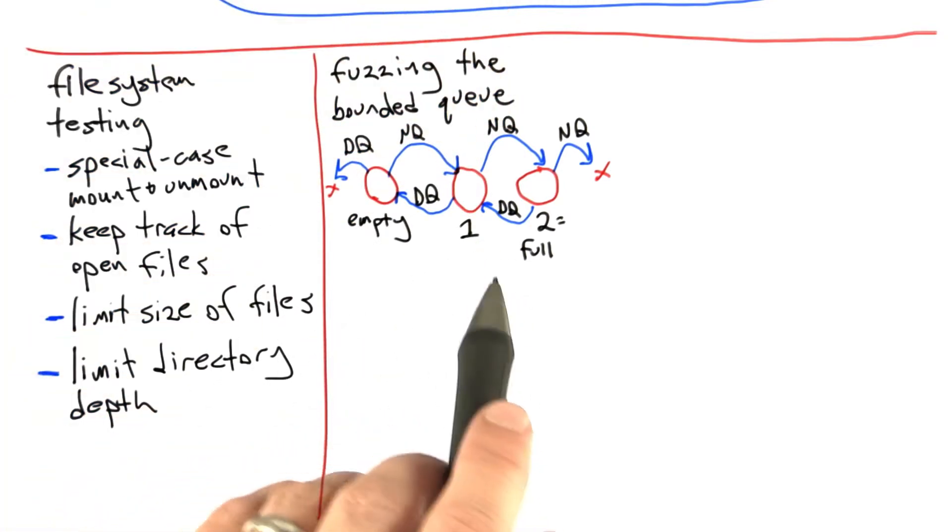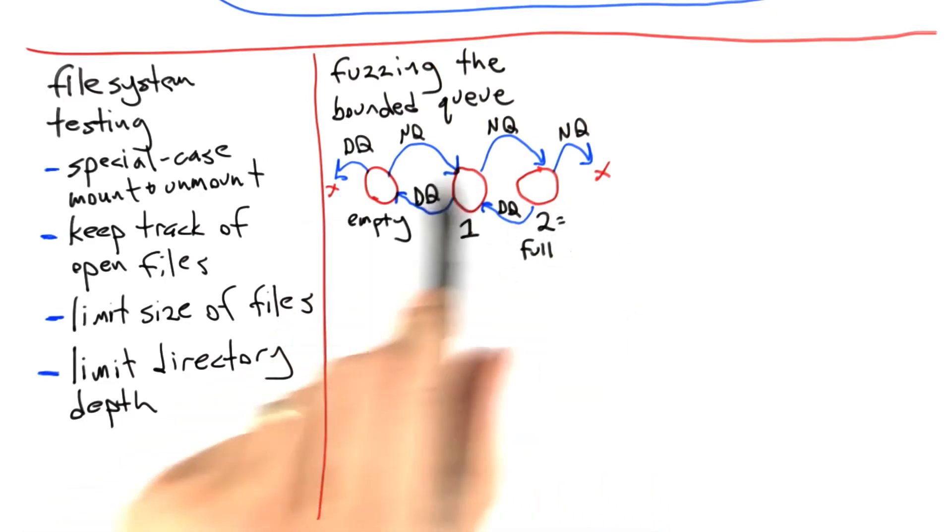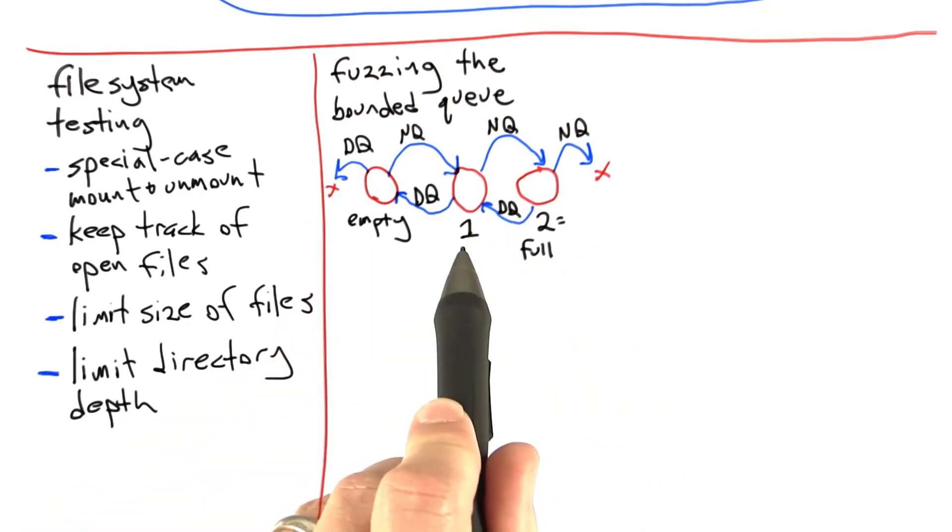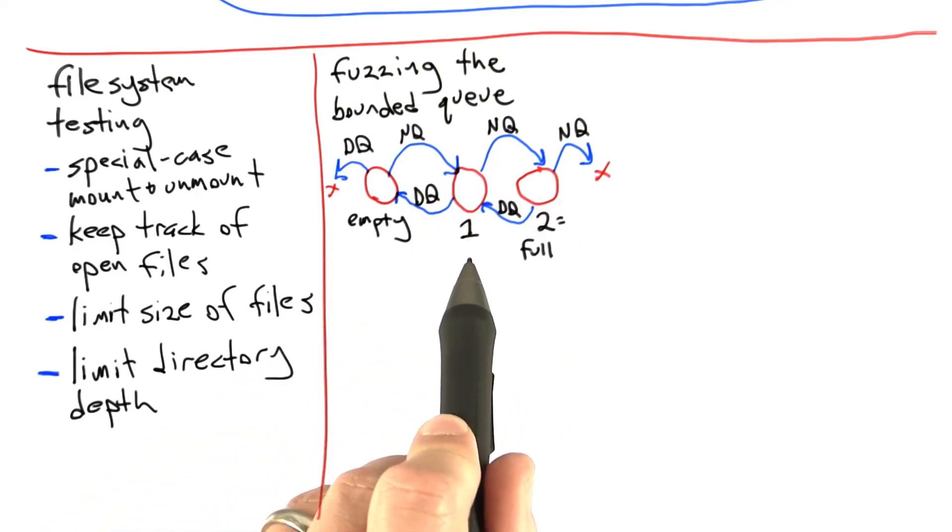And so the dynamic process that we're going to get when we run a random tester is some sort of a random walk through this finite state machine. And so what we want to ask ourselves is, does this random walk have a reasonable probability of executing all the cases?